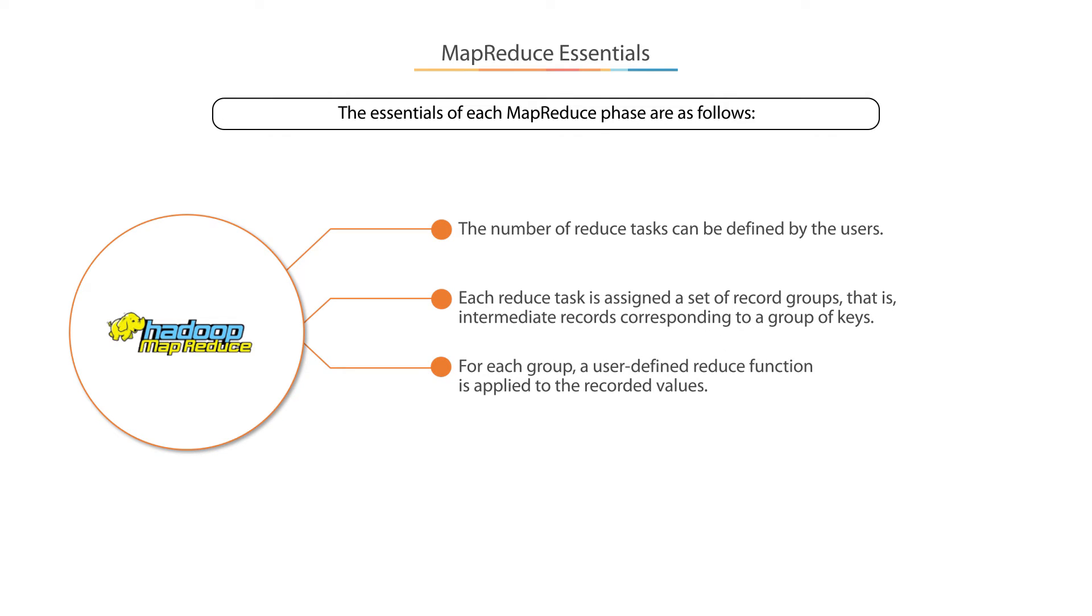Third, for each group, a user-defined reduce function is applied to the recorded values. And fourth, the reduce tasks are read from every map task, and each read returns the record groups for that reduce task.